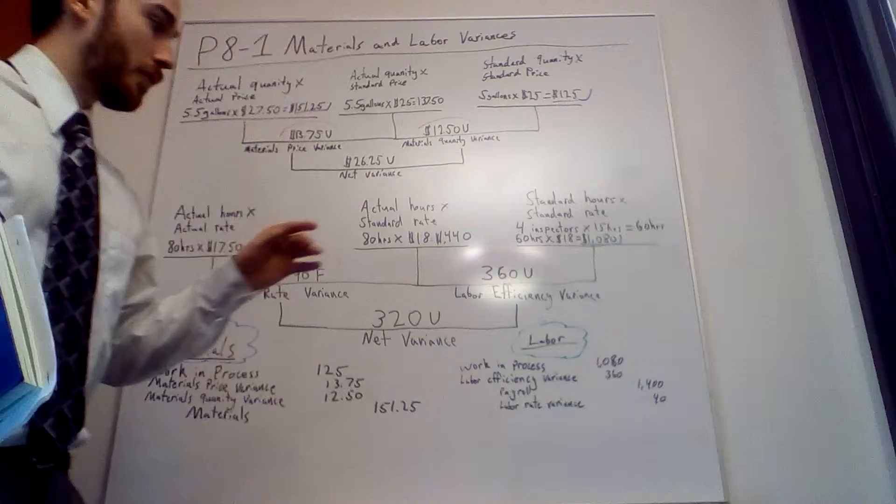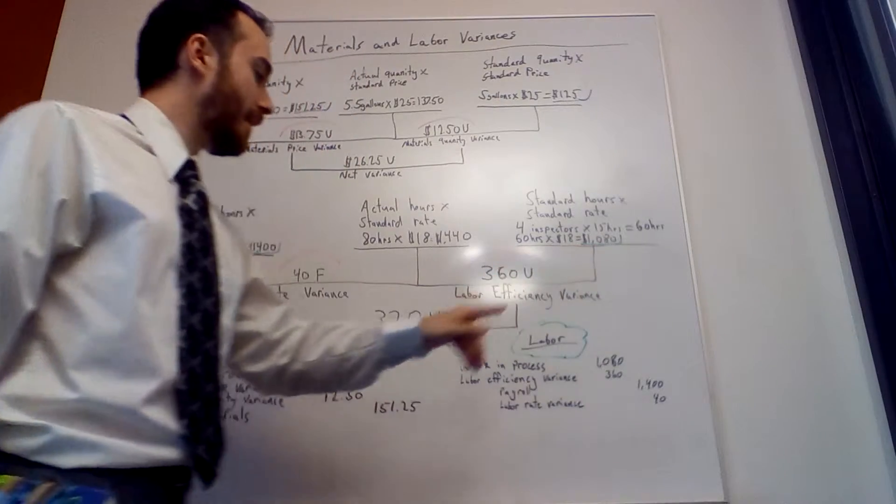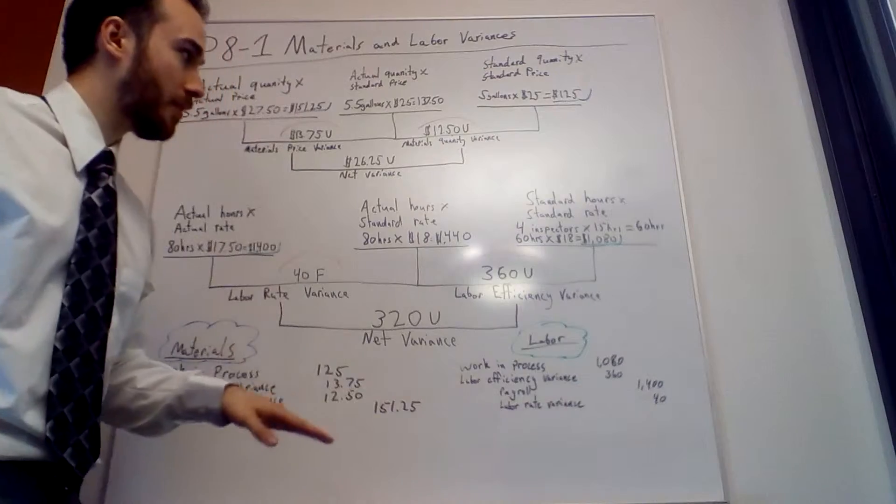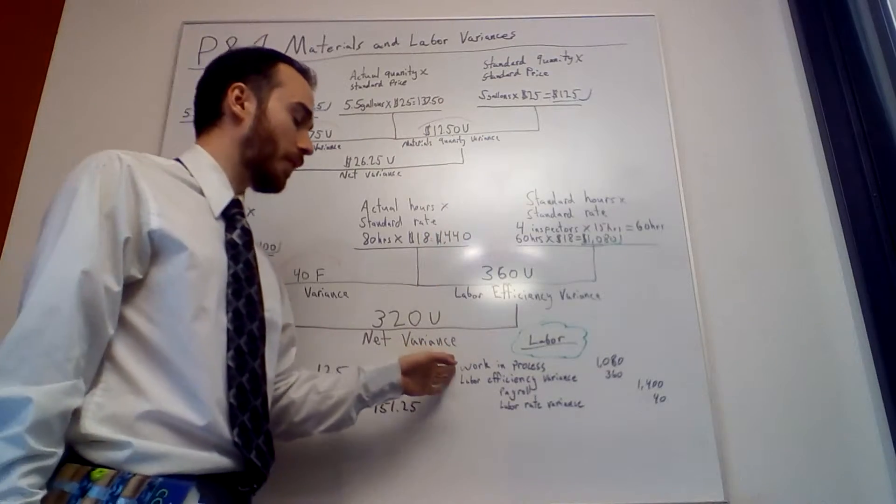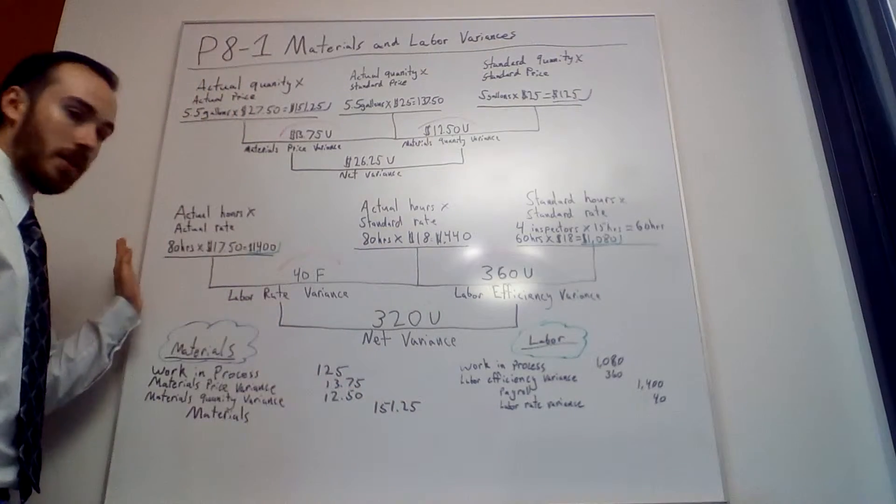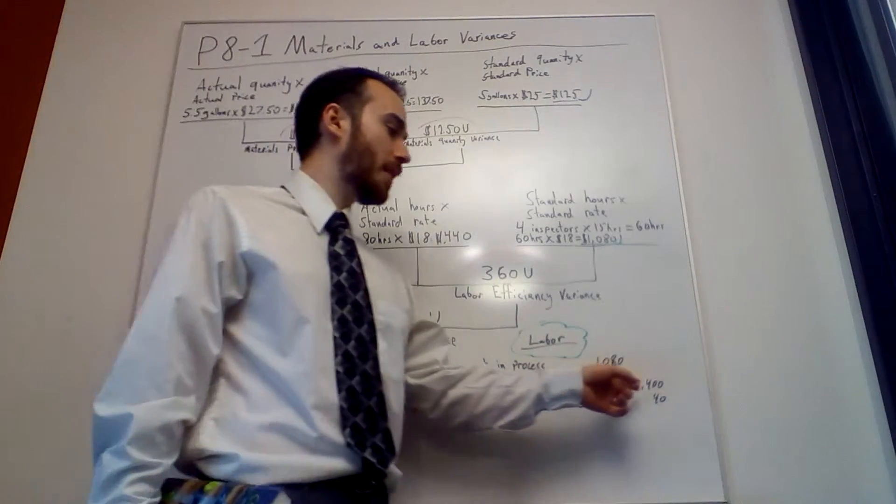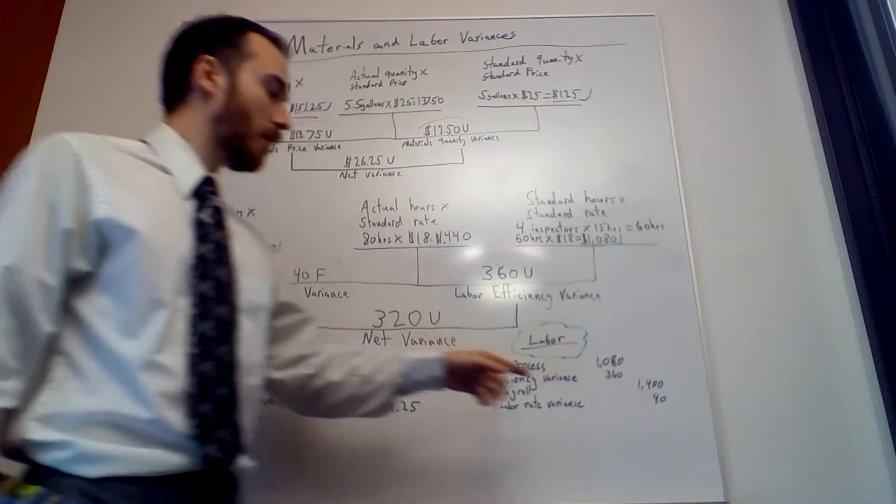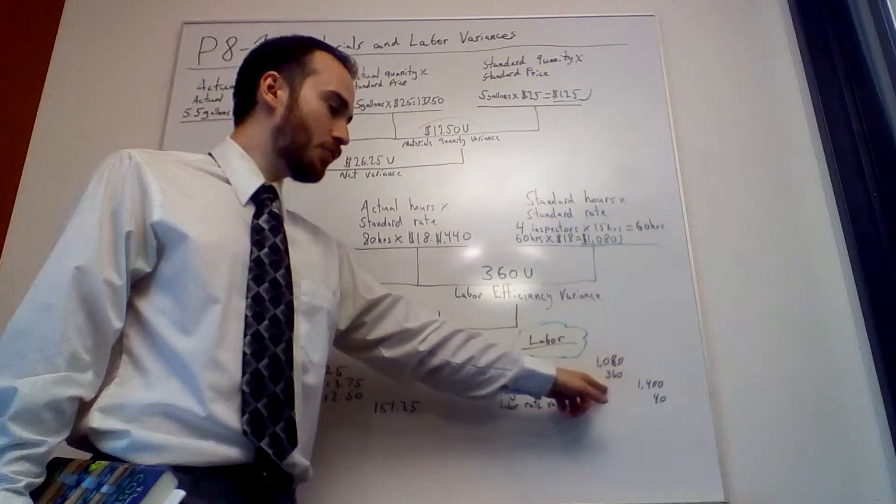For labor, it's the same thing. The far right, $1,080, is what we debit to work in process. That's what we're shoveling into work in process because once you have the standard amount, what you expect is what you're going to go with. Any unfavorables are debits. The far left on labor is always going to be a credit to payroll. We credit payroll for $1,400 because that's what actually happened, what we actually paid them. When we move it from payroll into work in process, we're keeping track of the differences.